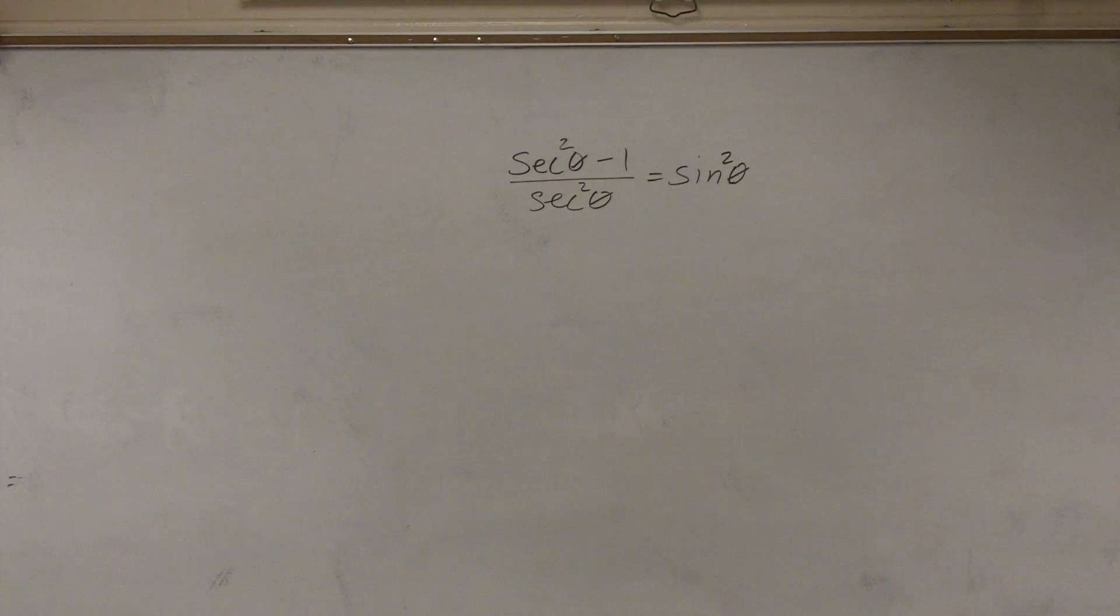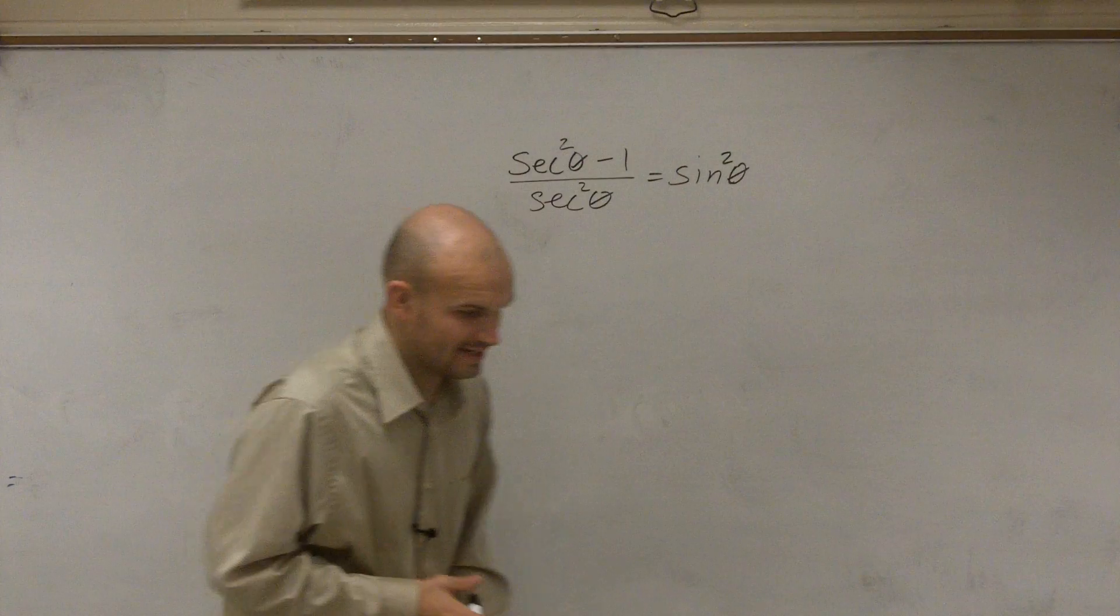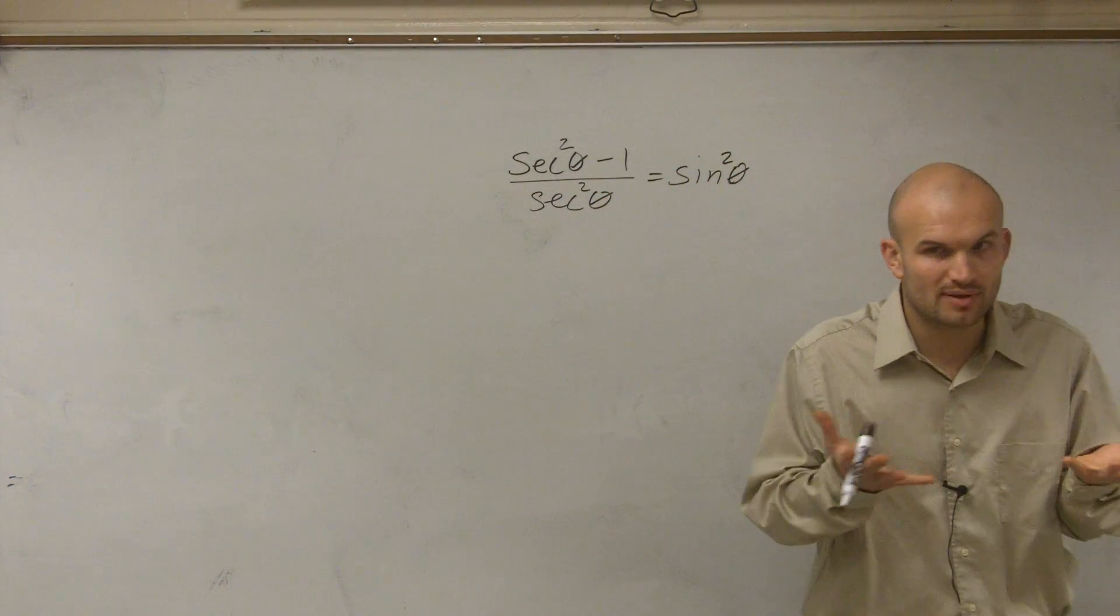All right, so when looking at a problem like this, what we want to do is we're going to have to verify the identity. And the first thing we want to do when looking at verifying identities is we just want to pick one side.